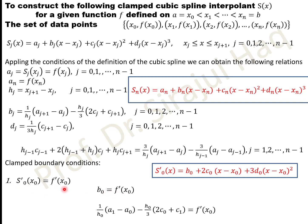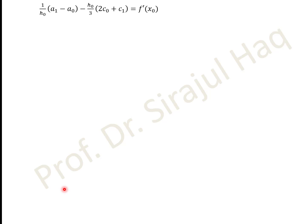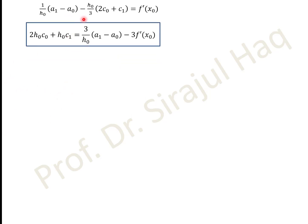This equation comes from the first condition of the clamped spline. Simplifying by multiplying both sides by 3 gives: (3/h0)(a1 − a0) − 2c0·h0 − c1·h0 = 3f'(x0). You can see that this equation is entirely in terms of c0 and c1 — we have eliminated b_j and d_j.